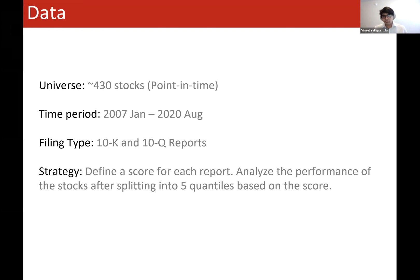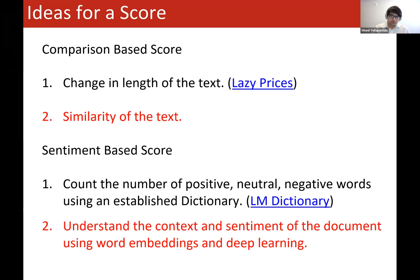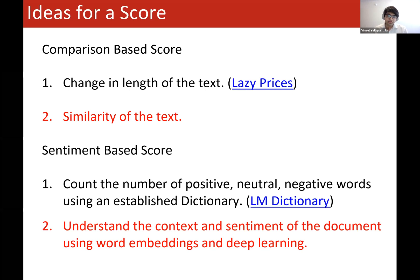The fundamental problem comes down to figuring out a score for these reports. There are many ways: you could do a comparison-based approach, finding how much the length of the text changed relative to the previous filing, and how similar the text is to the previous filing. These are analogous to traditional methods. You can also use sentiment-based scores with a defined lexicon — finding positive, negative, and neutral words — or use deep learning to figure out the sentiment of a paragraph. Today I'll be going through two of these methods.